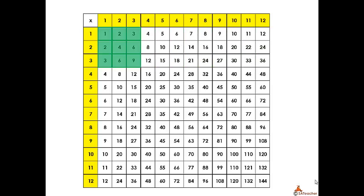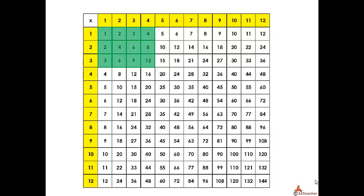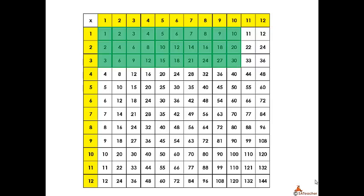So let's start to multiply. 1 times 3 is 3, 2 times 3 is 6, 3 times 3 is 9, 4 times 3 is 12, 5 times 3 is 15, 6 times 3 is 18, 7 times 3 is 21, 8 times 3 is 24, 9 times 3 is 27, 10 times 3 is 30, 11 times 3 is 33, and 12 times 3 is 36.